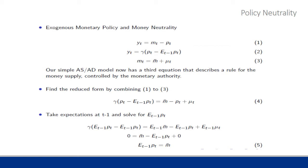Here we have an example of an economy represented by three equations — one, two, and three. Here we have the aggregate demand equation, the aggregate supply equation, and another equation that explains the path of the money supply. We can think of this equation as representing the policy maker. We have the demand side, the supply side, and the policy maker, so there are now three agents in our model.